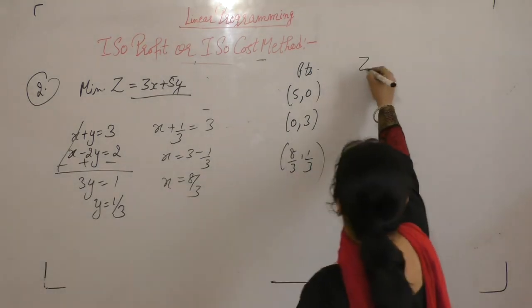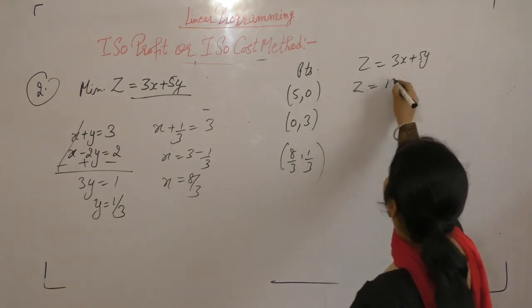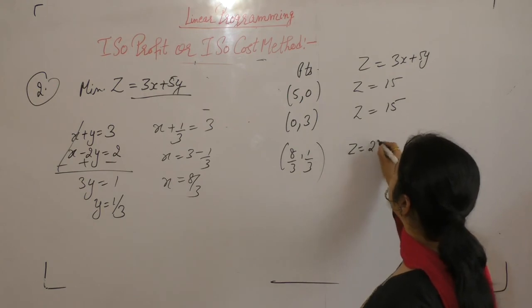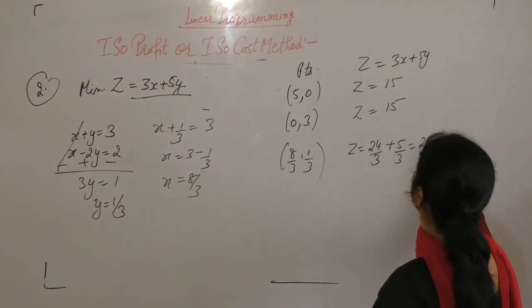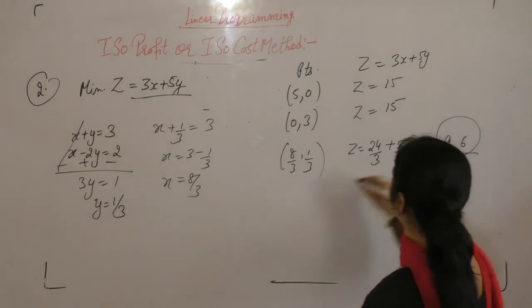Z equals 3x plus 5y. At (5, 0): 3 into 5 is 15. At (0, 3): 5 into 3 is 15. At (8 by 3, 1 by 3): 3 into 8 is 24, plus 5 by 3, that is 29 by 3, approximately 9.6. So this is the minimum value of Z.